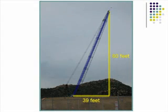Let's use the Pythagorean Theorem to find the length of the crane. If A squared plus B squared equals C squared, where C is the hypotenuse, we can find the length of the crane when we solve for C.